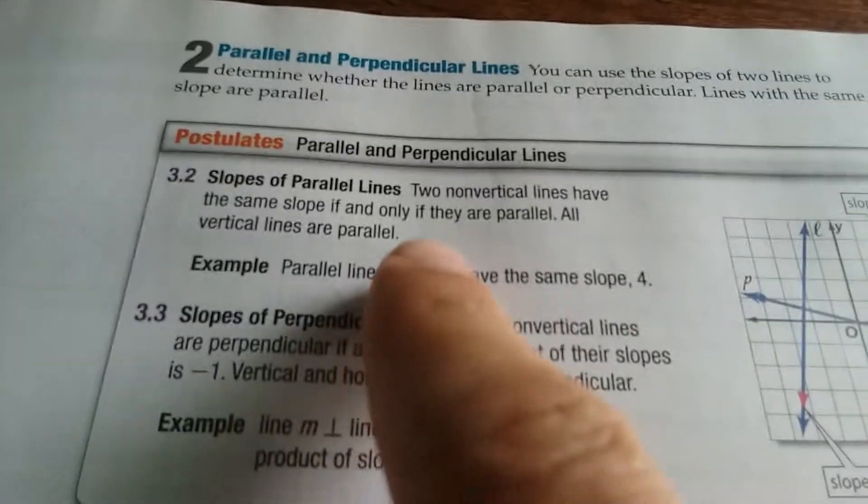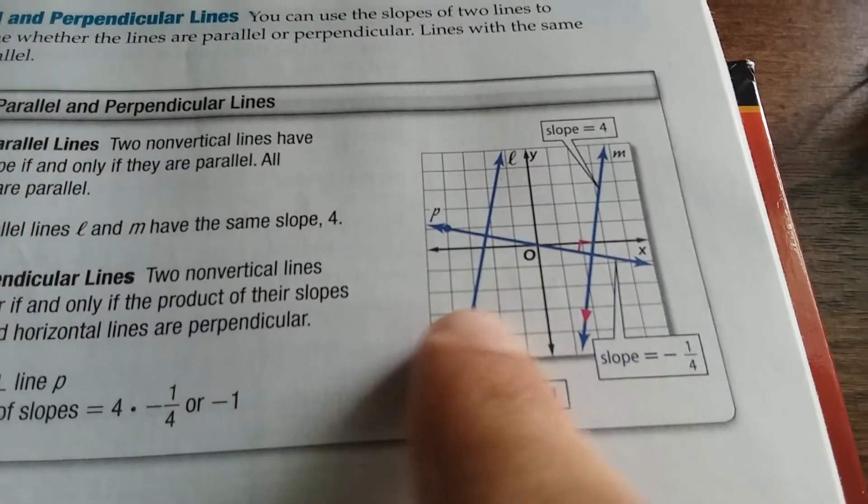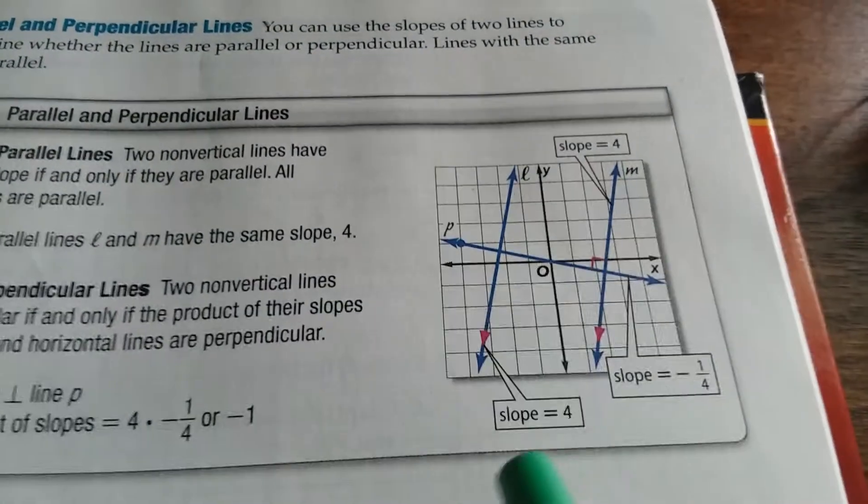Okay, just a quick reminder, remember that lines are parallel if they have the same slope. So these two lines here are parallel because they have a slope of 4. So L and M are parallel.